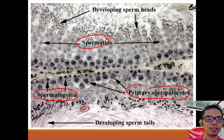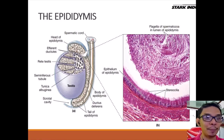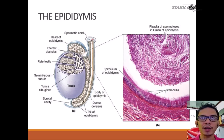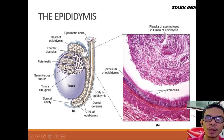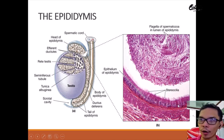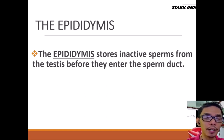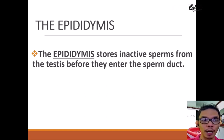The sperm cell is dumped into a portal and goes to the next part — the epididymis. Just like a car manufacturing facility, the epididymis is like a warehouse where it stores inactive sperm. Under the microscope you can see this is where the inactive sperm is stored, protected by a surrounding wall. The function of the epididymis is to store inactive sperm before they enter the sperm duct for ejaculation.